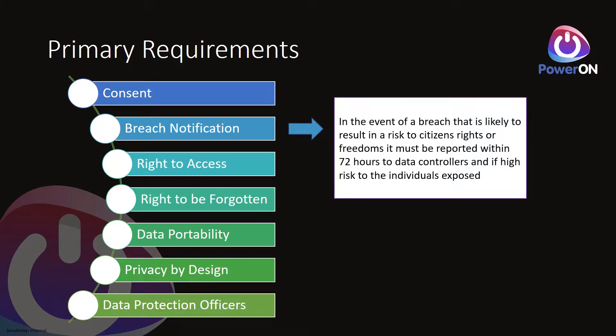On breach notification: most people think you must report every breach under GDPR — that's actually not true. The key aspect is the potential risk. You're required to report a breach if it represents a likely risk to citizens' rights or freedoms. In that circumstance, it must be reported within 72 hours to data controllers. The ICO wants to see you endeavouring to do breach reporting. If the breach is considered high risk to individuals, you must also notify those individuals directly.